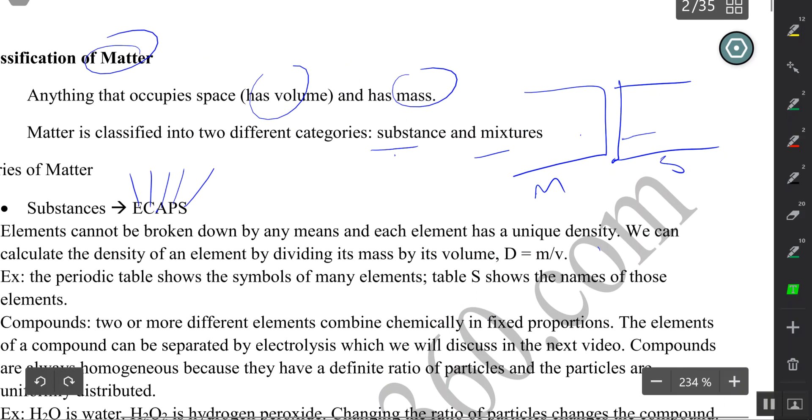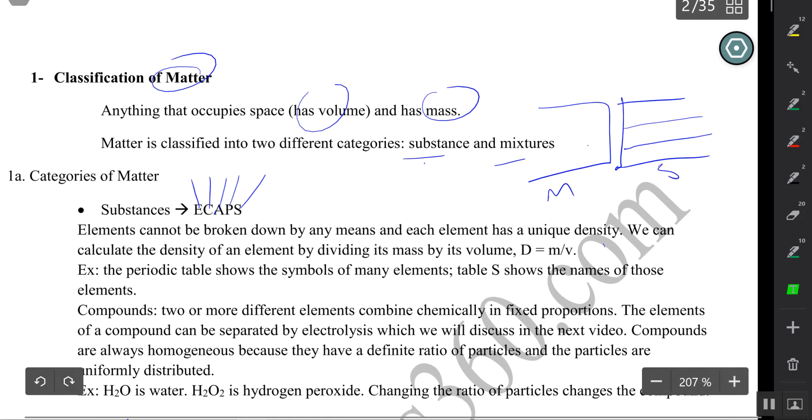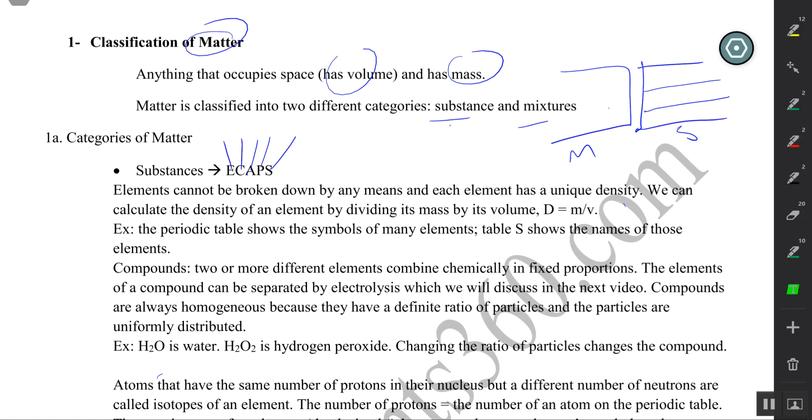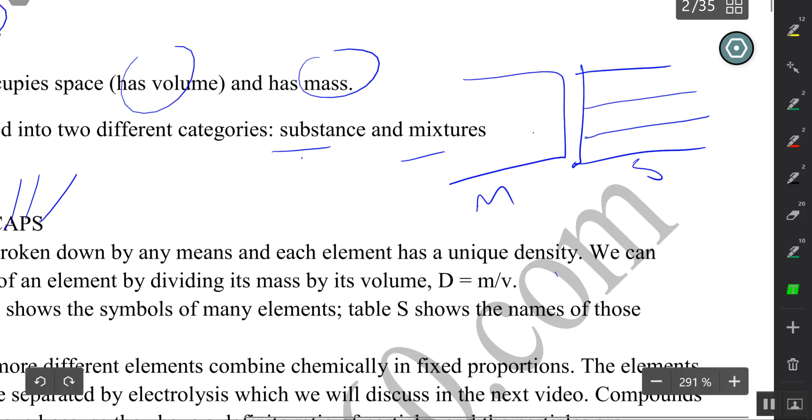So I'm going to have one shelf here for elements, one shelf here for compounds. There are two main types of compounds. I'm going to separate this shelf. These are ionic and molecular.